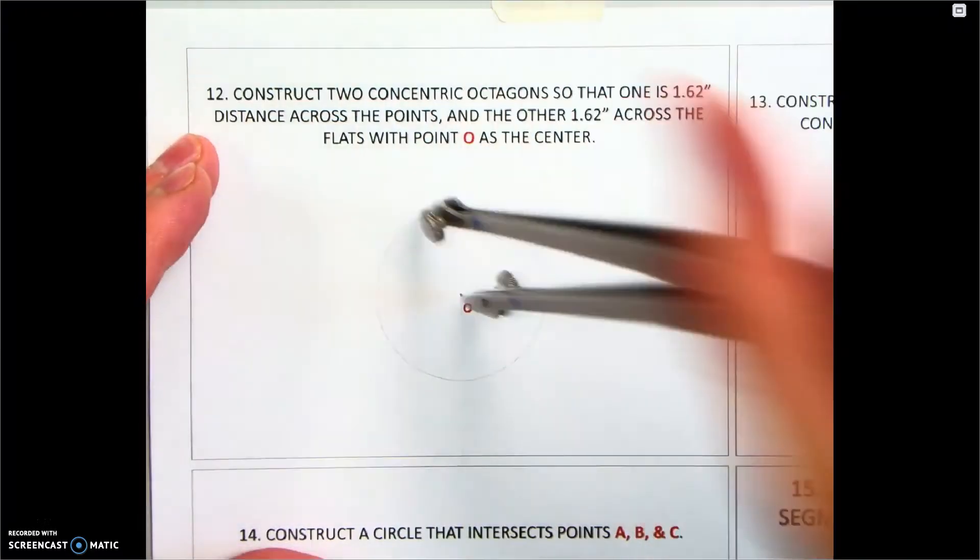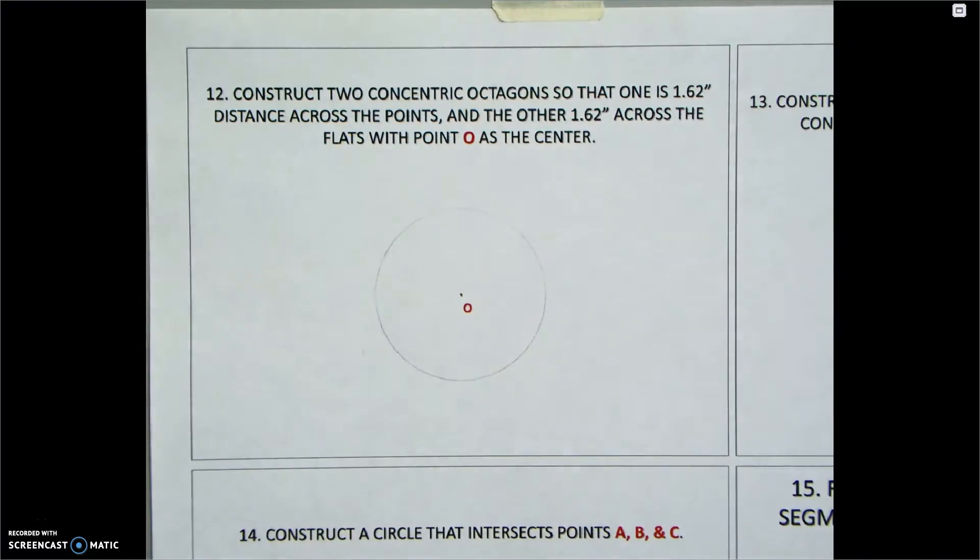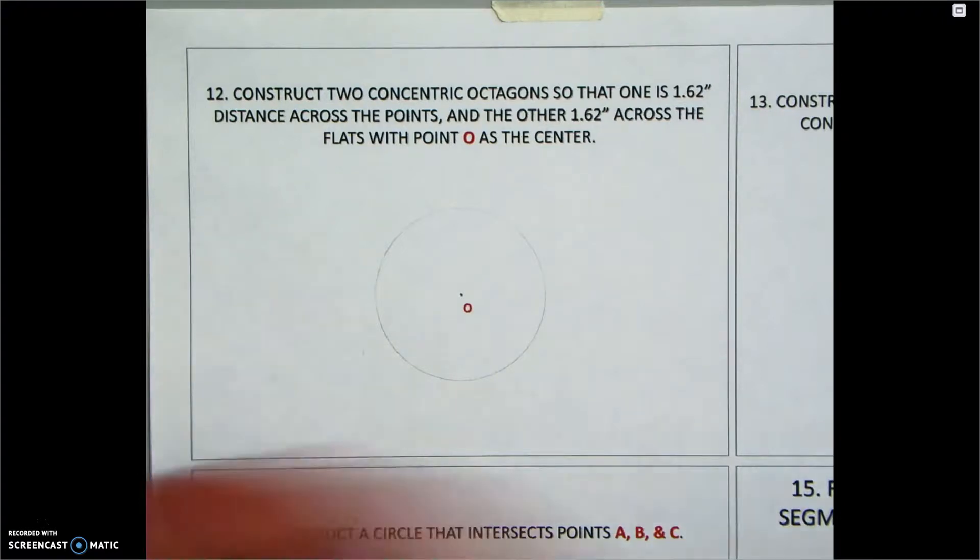Remember, the circle is not the end goal. So you don't want it to be super dark. You just want it to be dark enough to where you can see it, but easily erased later. There's our circle.